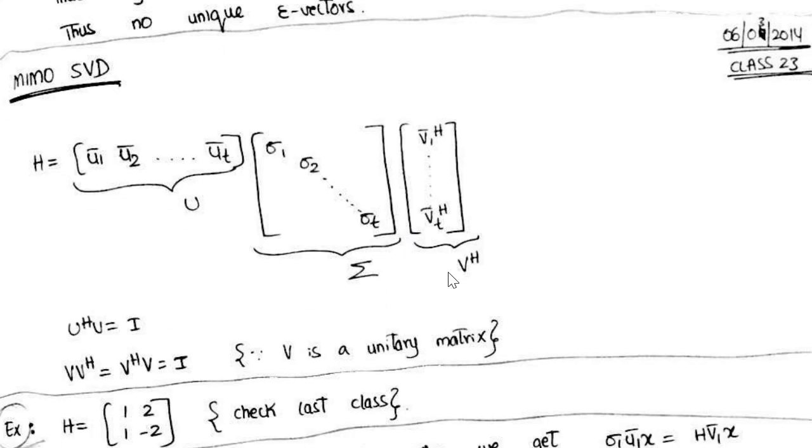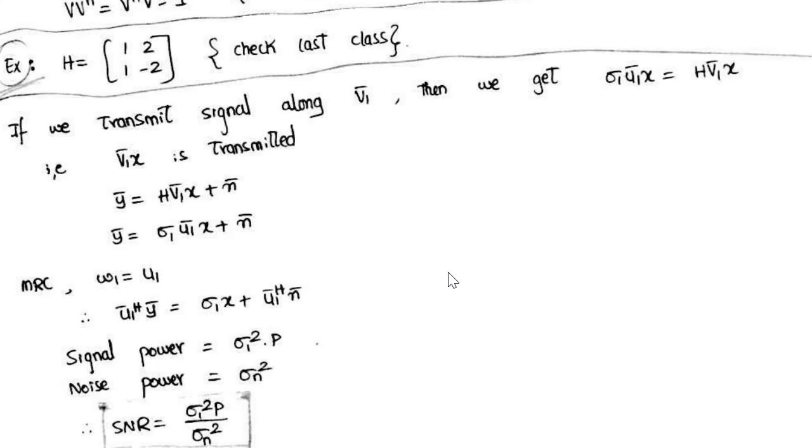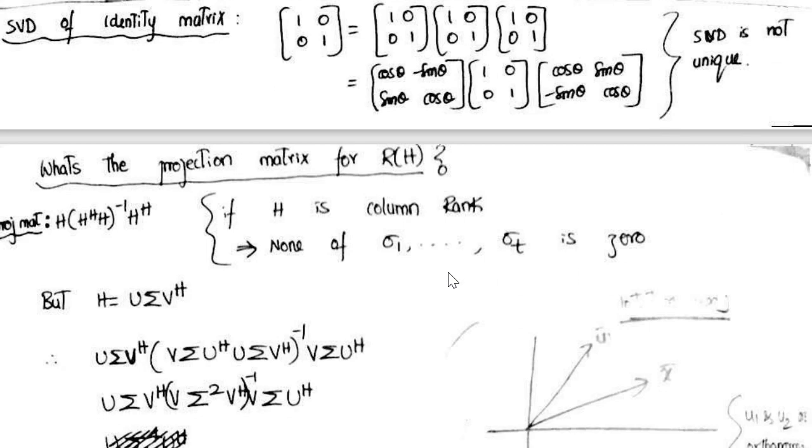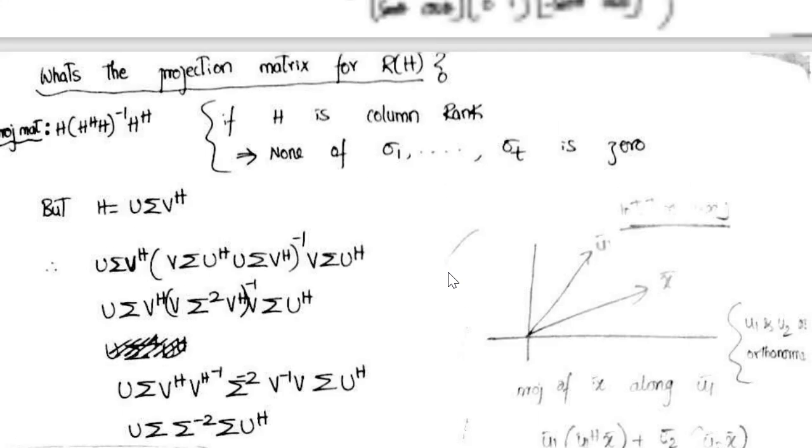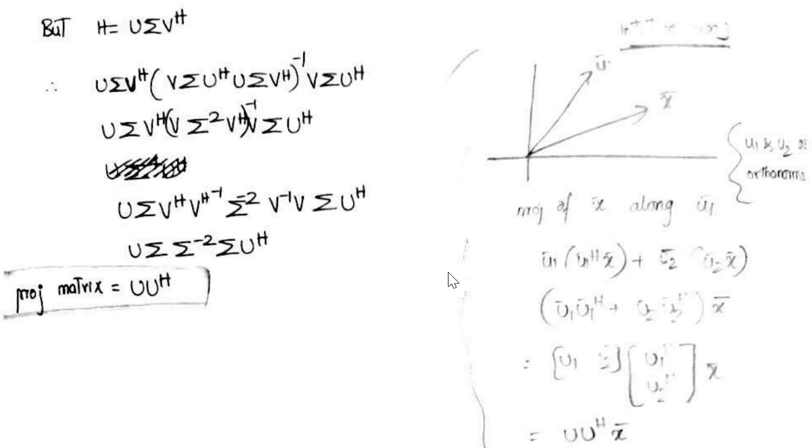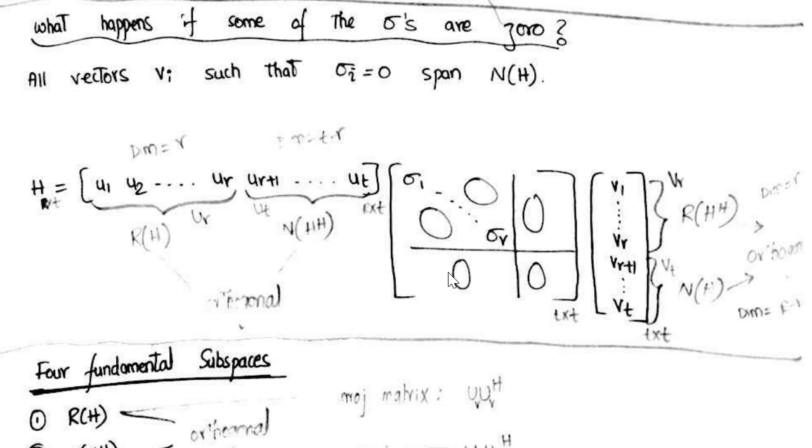So few things will be repeated in the next class for the sake of better understanding. What happens if some eigenvectors or singular values are zeros.